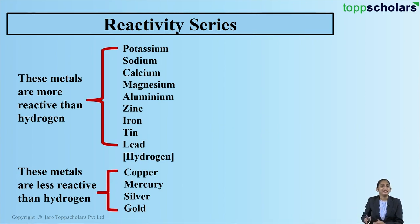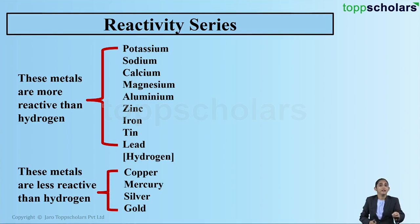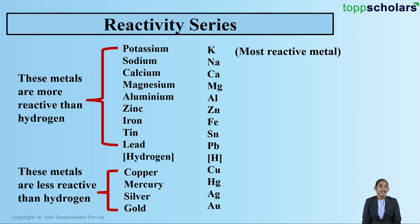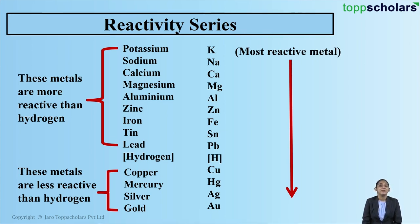The reactivity series is simply this arrangement wherein metals are arranged in the increasing or decreasing order of their reactivity. As you move from top to bottom in the reactivity series, the reactivity of the metal goes on decreasing, which means that the metals placed at the top of the reactivity series are highly reactive metals. The metals placed at the bottom are called less reactive metals.